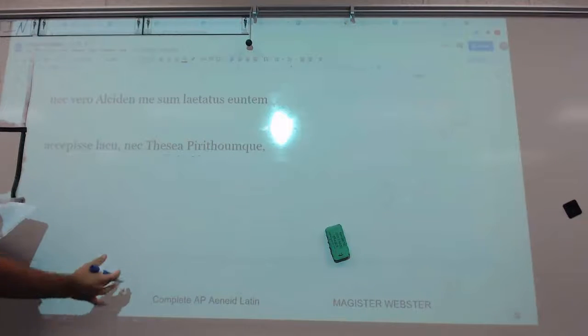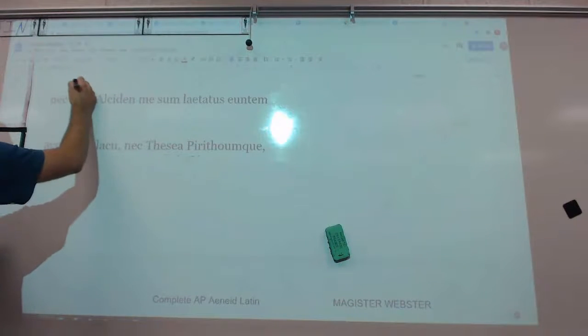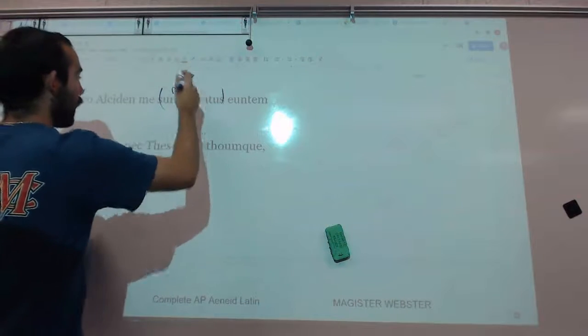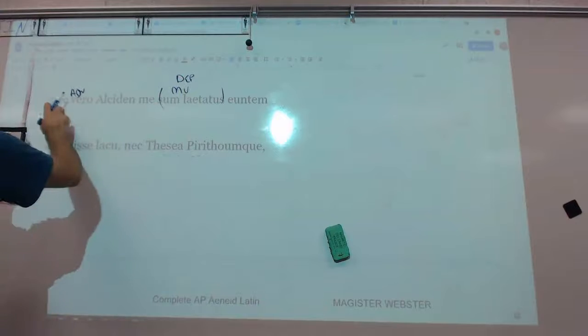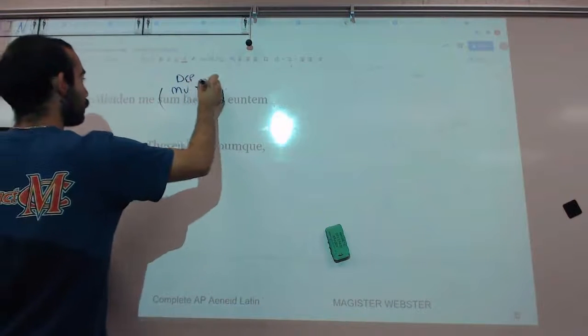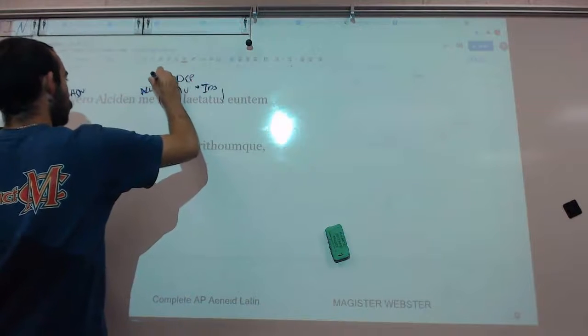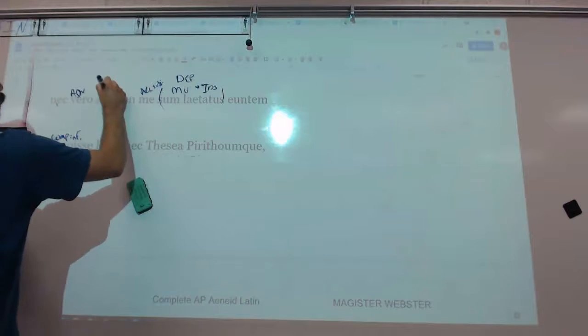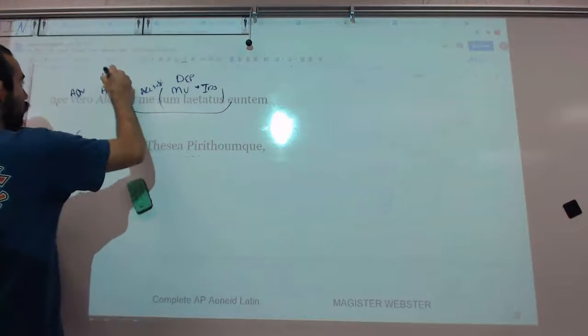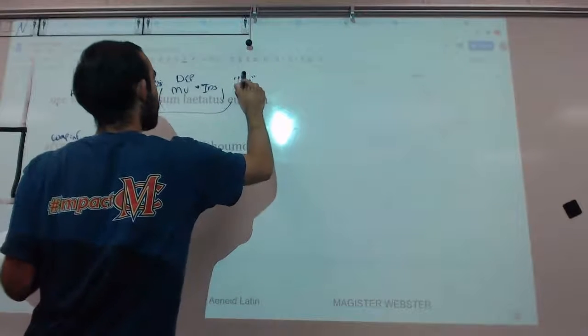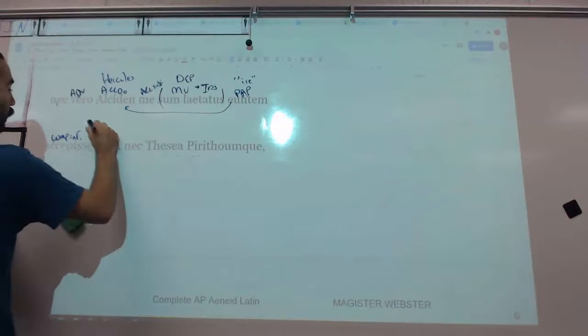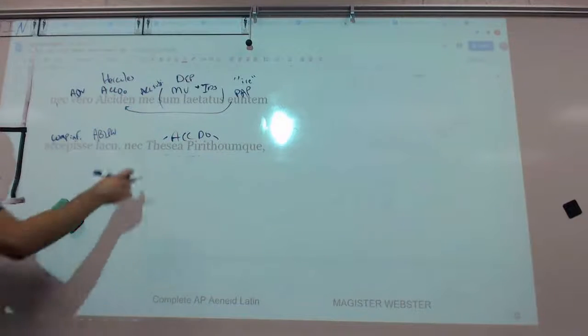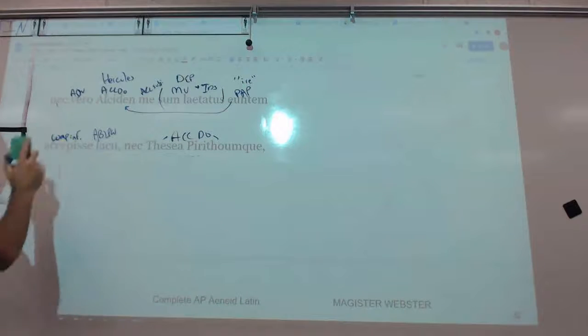He gets to talk about three characters who were able to go in the underworld, and he says, nec vero, nor truly, me sum laetatus. This is our main verb. Laetatus is laetor, which is from laetitia, to be happy. So he says, I did not, nor did I rejoice that, this is going to introduce an indirect statement. Me is an accusative subject. So I accepted this accusative direct object, Alciden, is Hercules.